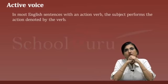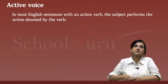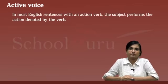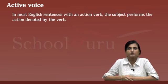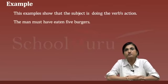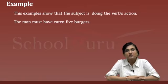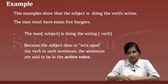Active voice. In most English sentences with an action verb, the subject performs the action denoted by the verb. For example, the subject is doing the verb's action: 'The man must have eaten five burgers.' The man is the subject — what is he doing? He is eating. That is the verb. Because the subject does or acts upon the verb in such sentences, the sentences are said to be in the active voice.